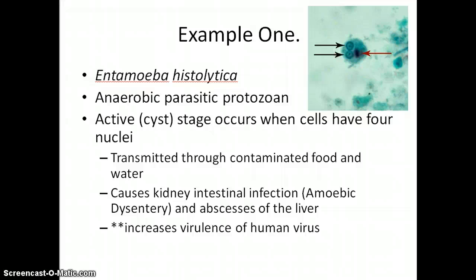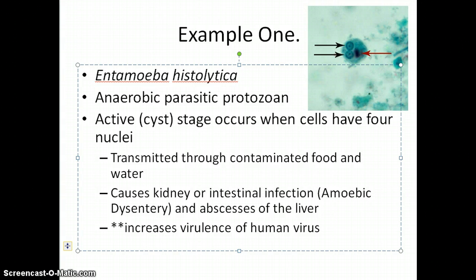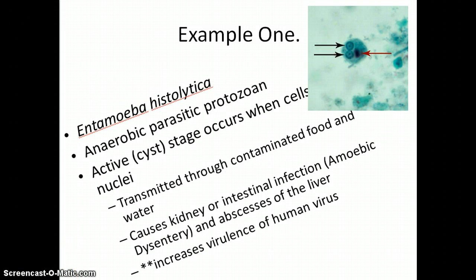In its active stage, you can tell that someone is infected by Entamoeba histolytica when the cells have four nuclei, as you can see in the picture at the top. This one is not quite in its mature form — it only has two nuclei. It is, like most parasitic amoebas, transmitted through contaminated food and water. This specific one can cause kidney or intestinal infection known as amoebic dysentery, and can also cause abscesses of the liver. This specific amoeba increases the virulence of other human viruses such as HIV, meaning that it stimulates the reproduction of those viral cells.